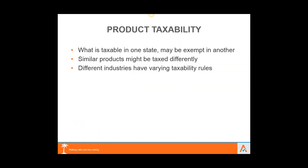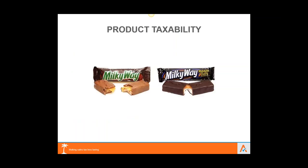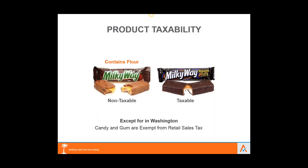On product taxability: a common example is a Milky Way versus a dark Milky Way candy bar. One can be non-taxable while the other is taxable, because one has flour and is treated as food in many states, whereas the other is classified as candy. And with tax it's never a definitive answer — with the exception of Washington, which exempts both candy and gum. These are just the nuances around product taxability.